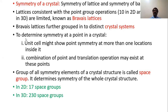To determine symmetry at a point in a crystal, we must know two things: first, a unit cell might show point symmetry at more than one location inside it; and second, a combination of point and translation operations may exist at that point — meaning translation operations also contribute to the symmetry of the crystal.